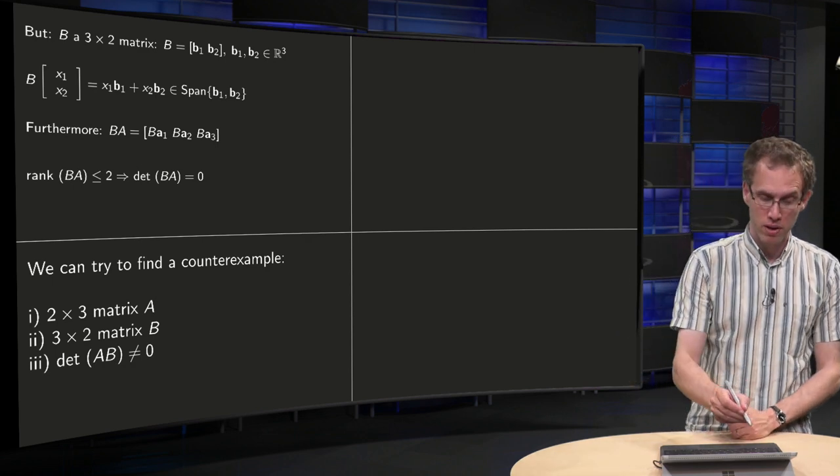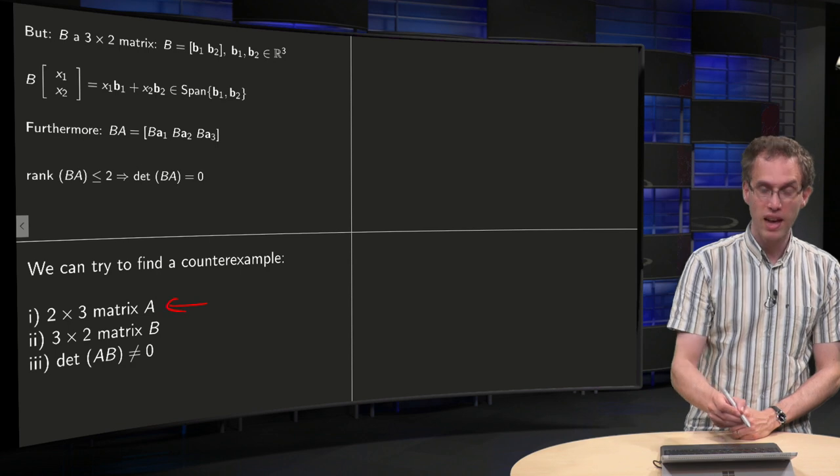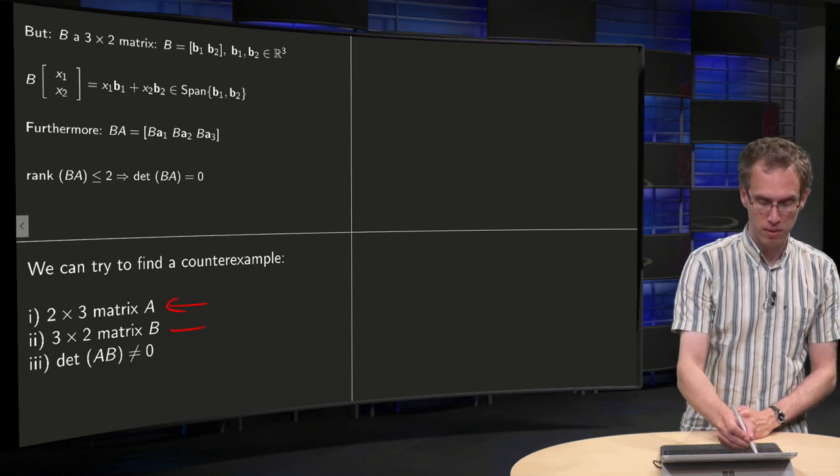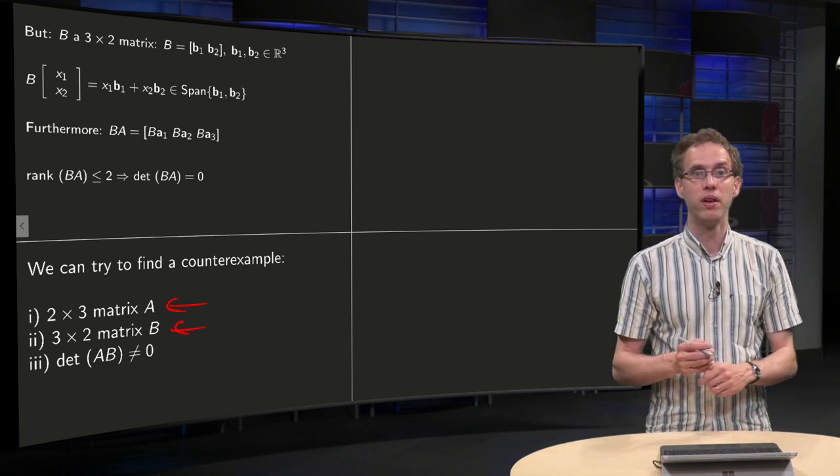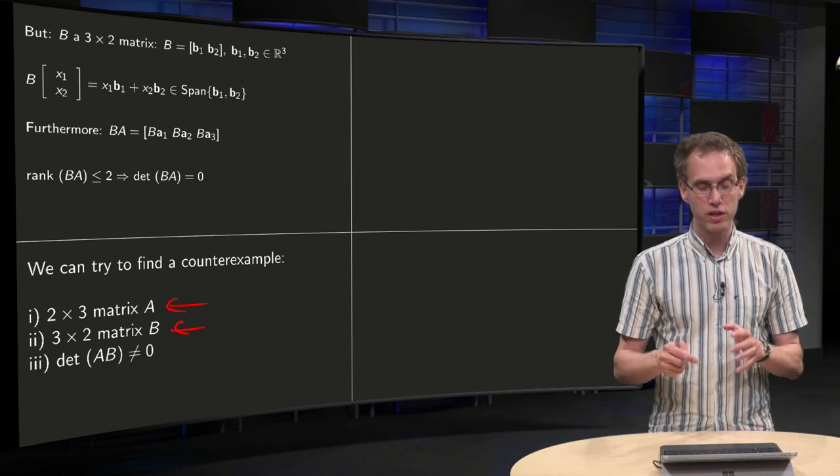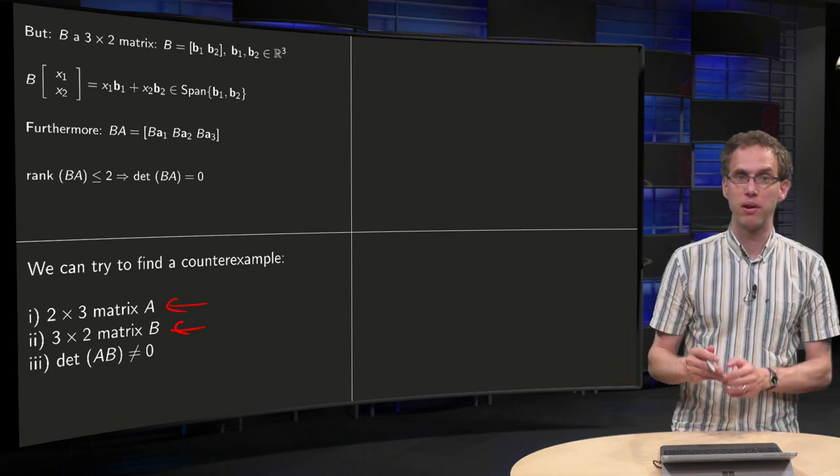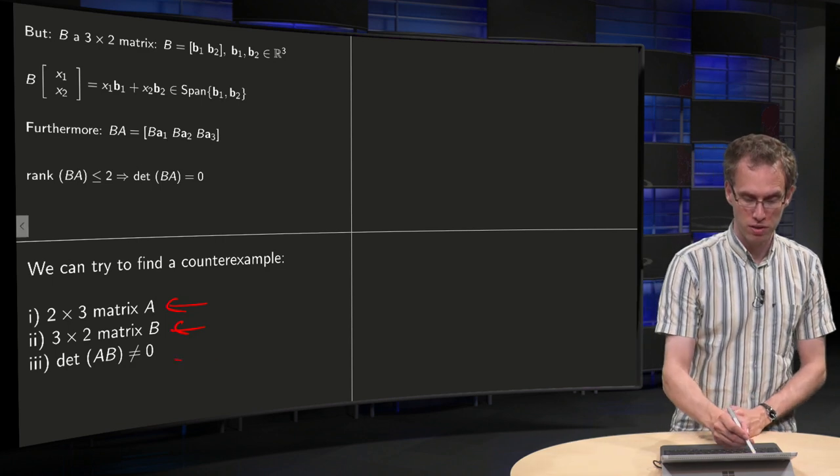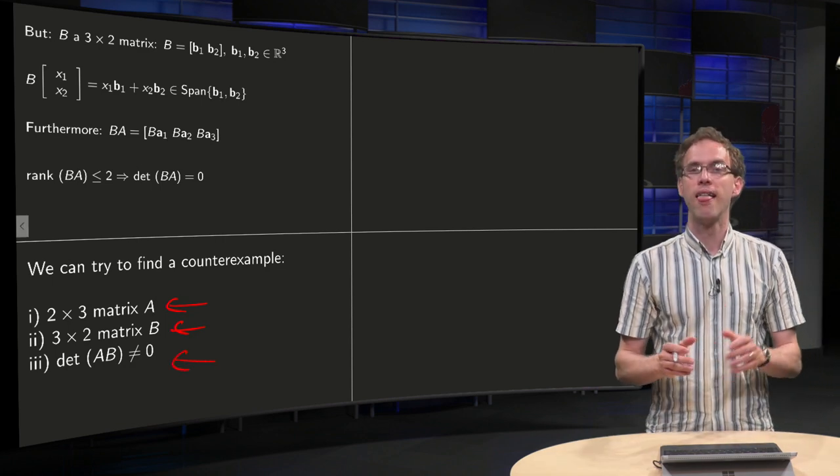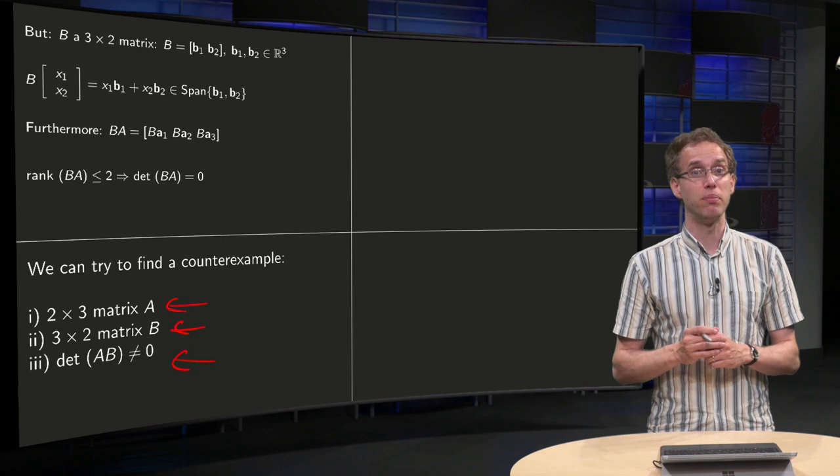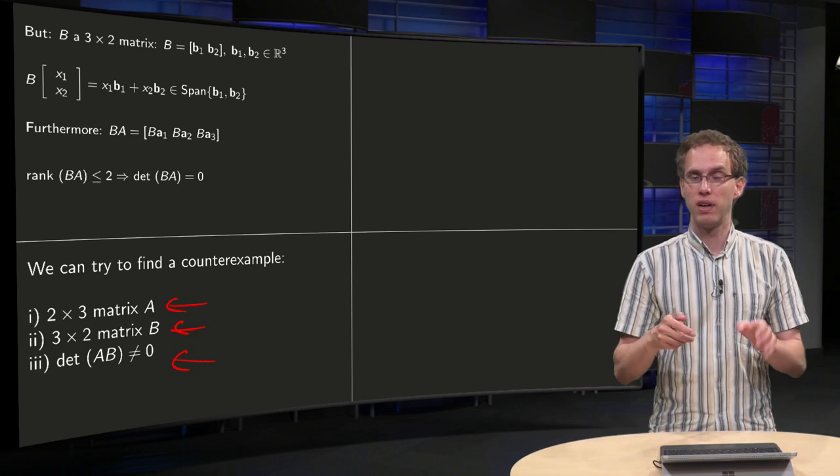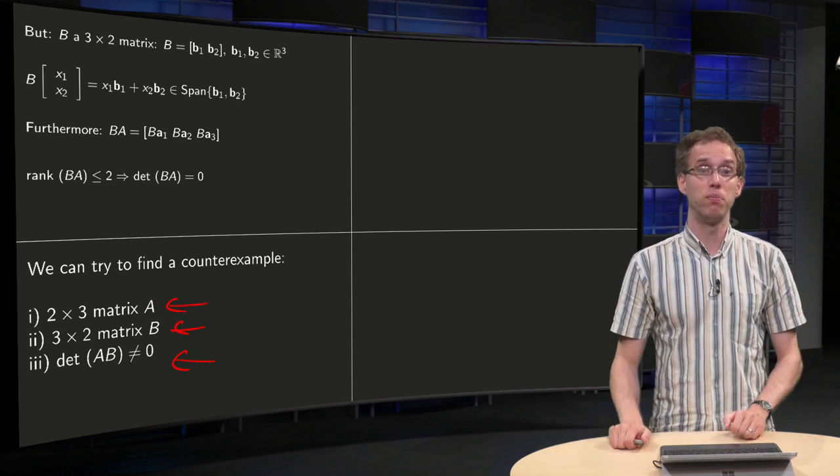So what can you do? You can try to find the matrix A, a 2 by 3 matrix, B, a 3 by 2 matrix, such that det(BA) is always zero, but now you can compute A times B, and you can try to find A and B such that this determinant is not equal to zero. It's not that difficult to find, by the way. I mean, if you would write down anything it will probably already work.